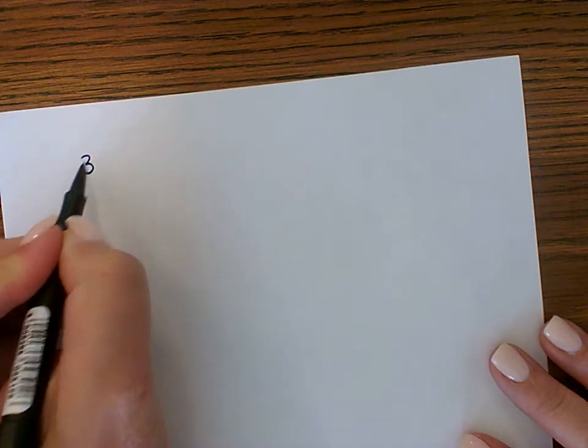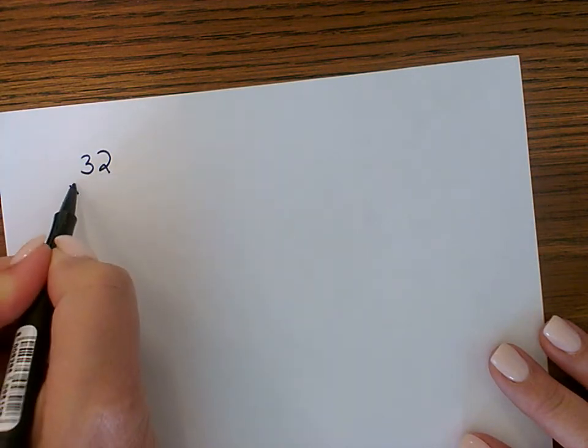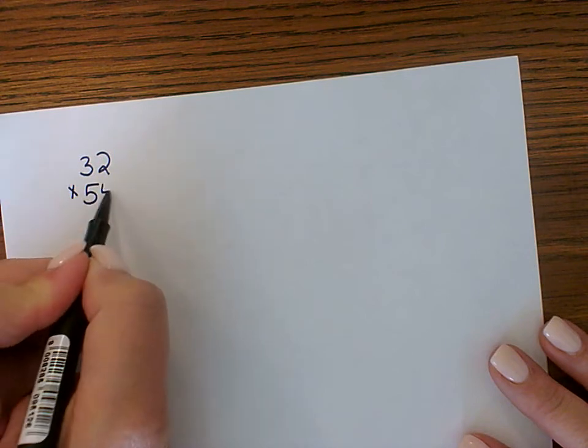Hi everybody, this is Mrs. Godfrey here. I'm just creating a quick video to show you about an alternative method that you and your child can use to multiply multi-digit numbers. I know you're all very familiar with the traditional algorithm, which is just simply what you learned in school. And 32 times 54.